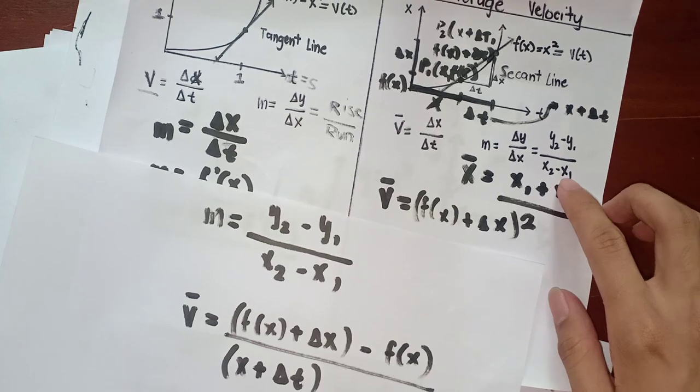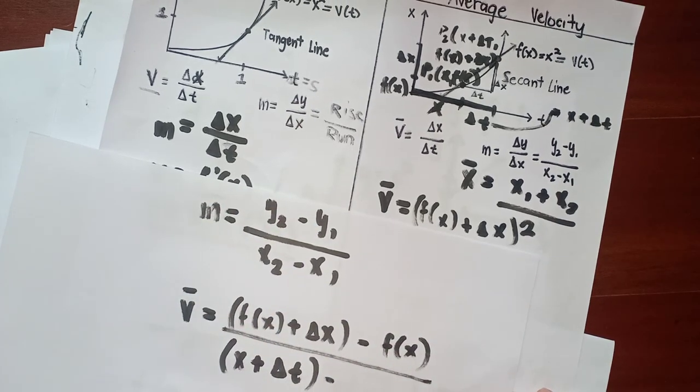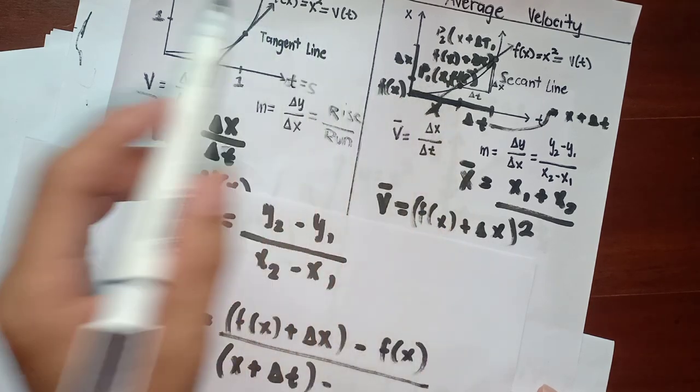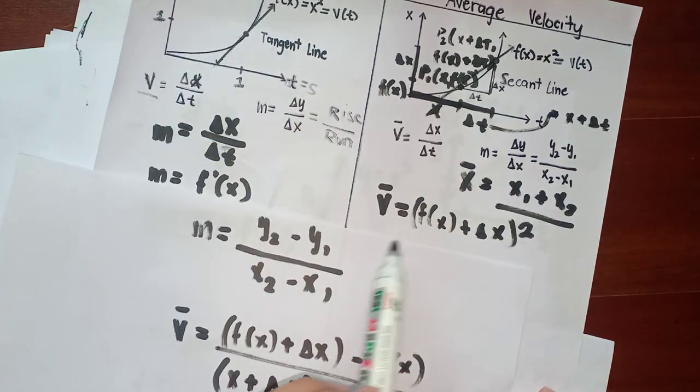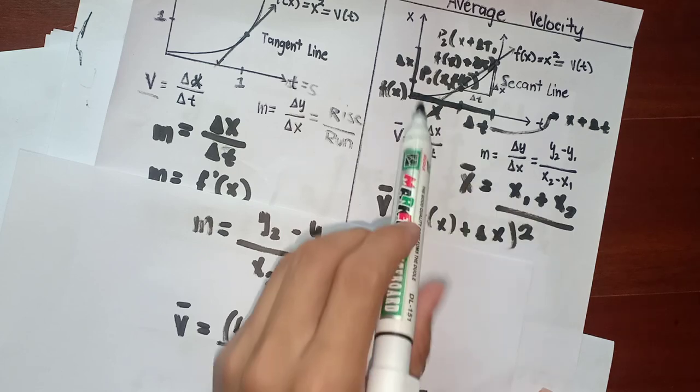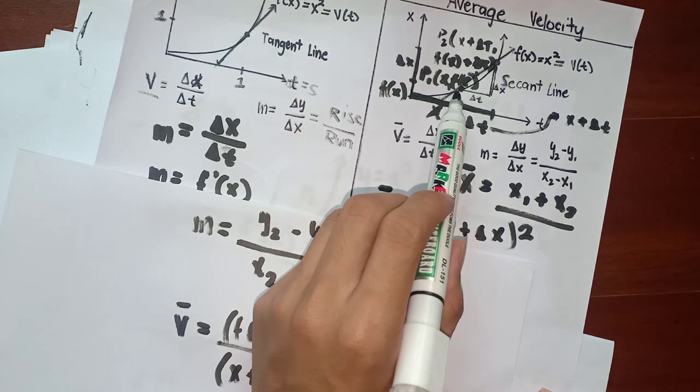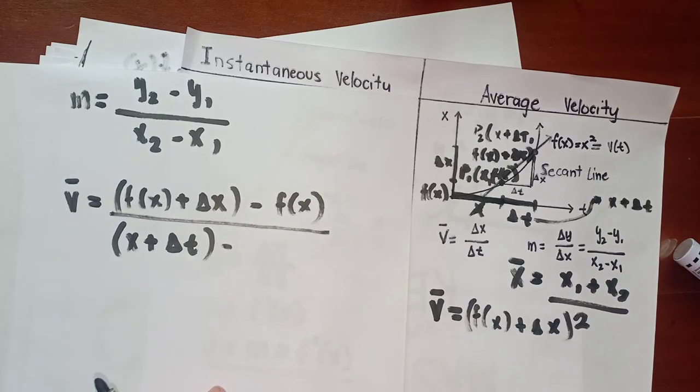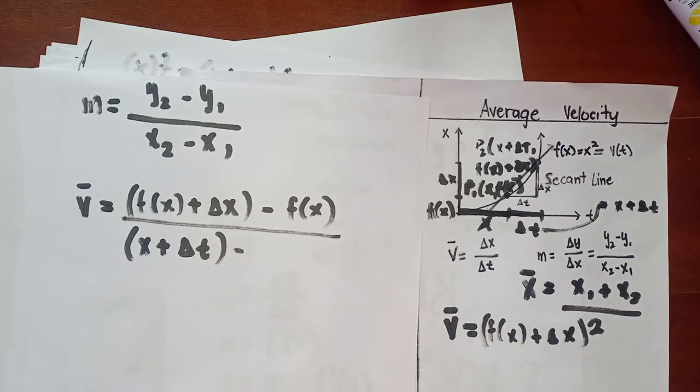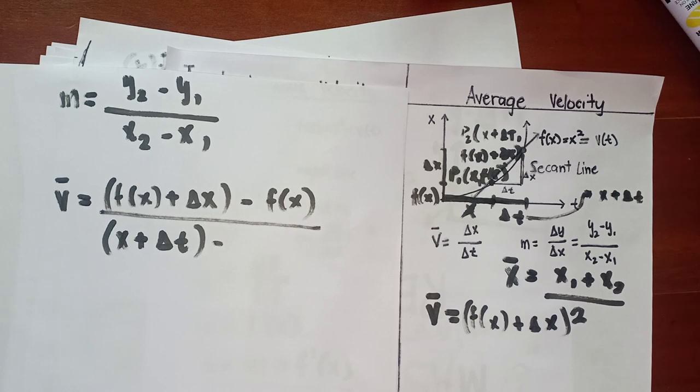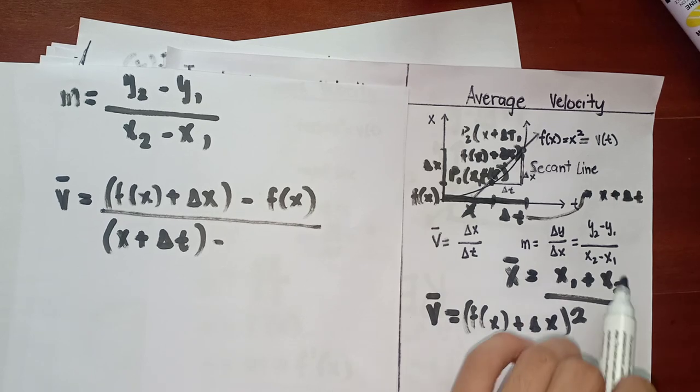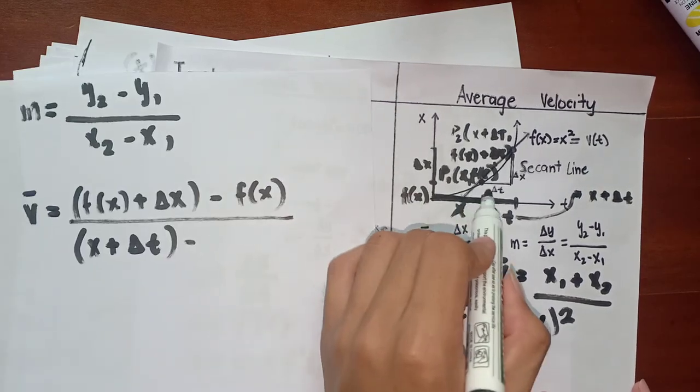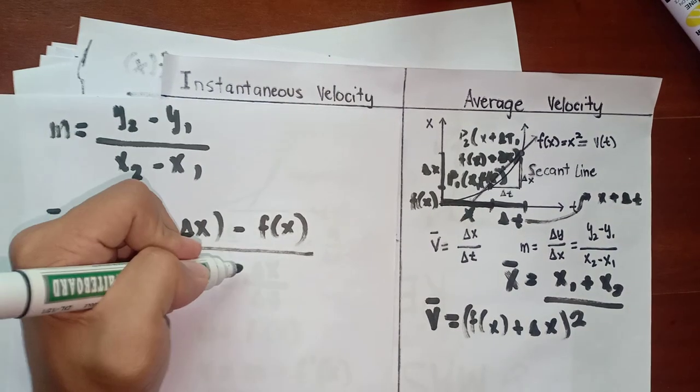I'm going to rewrite the formula: y sub 2 minus y sub 1 all over x sub 2 minus x sub 1. I'll also rewrite the formula of the velocity, which is the average velocity equals slope. We have y sub 2 equals f of x plus delta x minus y sub 1, which is just f of x, all over x sub 2, which is the time distance of this point, x plus delta t, minus x sub 1, which is just x.